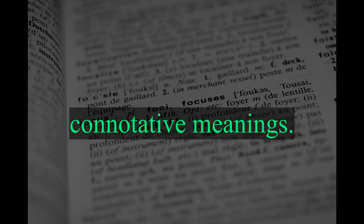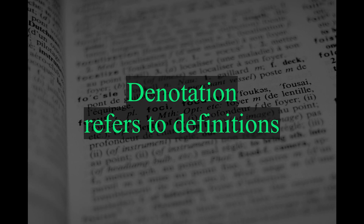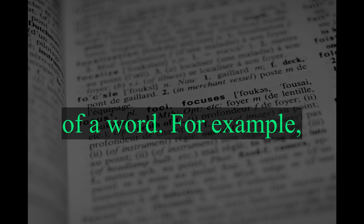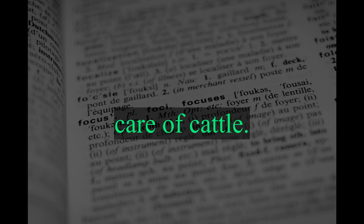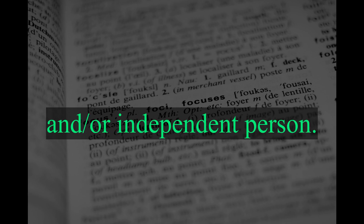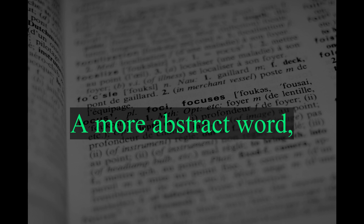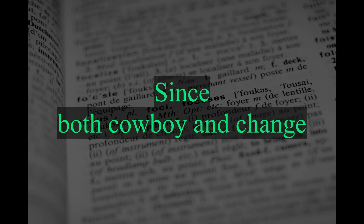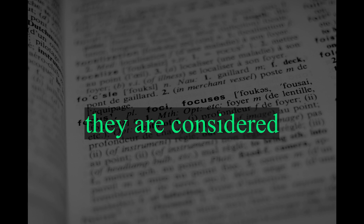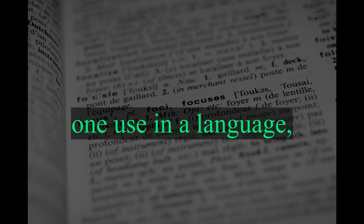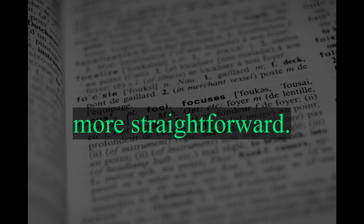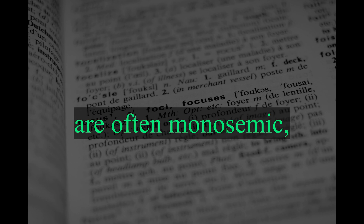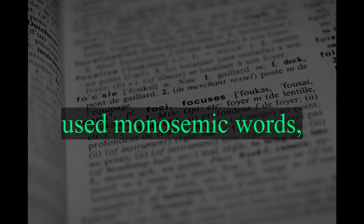Words have denotative and connotative meanings. Denotation refers to definitions that are accepted by the language group as a whole, or the dictionary definition of a word. For example, the denotation of the word cowboy is a man who takes care of cattle. Another denotation is a reckless and/or independent person. A more abstract word, like change, would be more difficult to understand due to the multiple denotations. Since both cowboy and change have multiple meanings, they are considered polysemic words. Monosemic words have only one use in a language, which makes their denotation more straightforward. Specialized academic or scientific words, like monosemic, are often monosemic, but there are fewer commonly used monosemic words — for example, handkerchief. Monosemic words are far outnumbered by polysemic words.